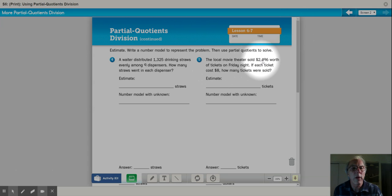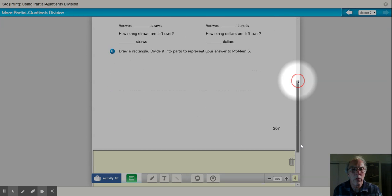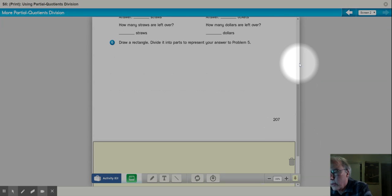So, there's problem 5. The local movie theater sold $2,496 worth of tickets on Friday night. If each ticket cost $8, how many tickets were sold? So, it's going to be a division problem with those two numbers. So, $2,496 divided by 8. Let's do a rectangle to solve it.